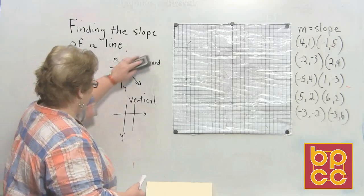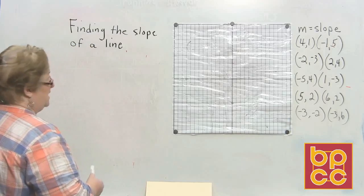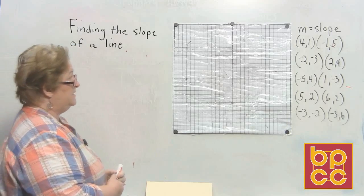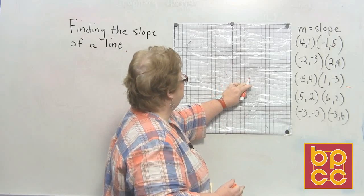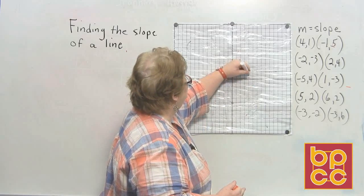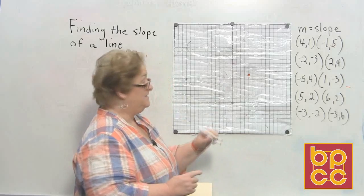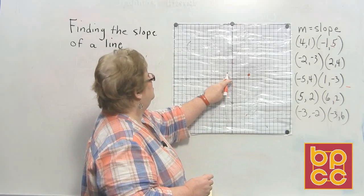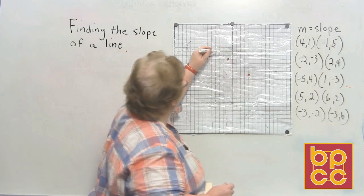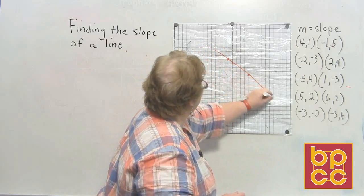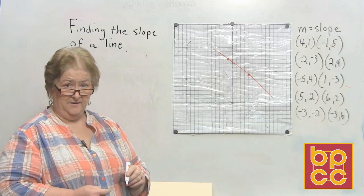Let me erase this, and we'll begin by plotting these two points. I'm going to go over four and up one — there's my first point. Then I'm going to go to negative one and up five — that's my second point. Now I'm going to draw a line, and we're going to determine what the slope of that line is.